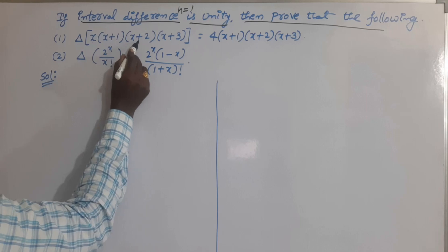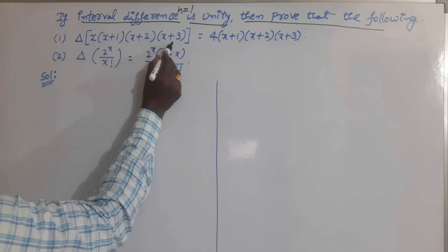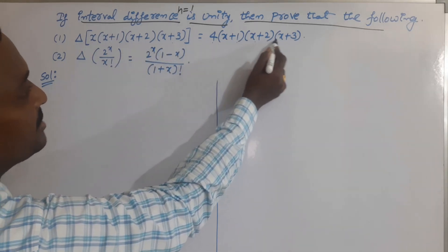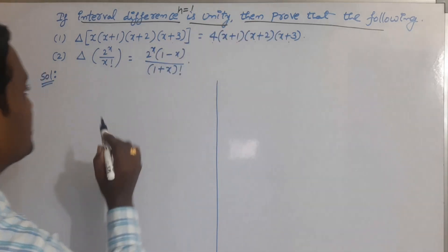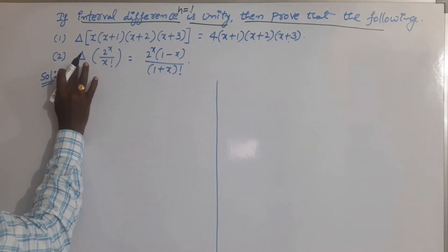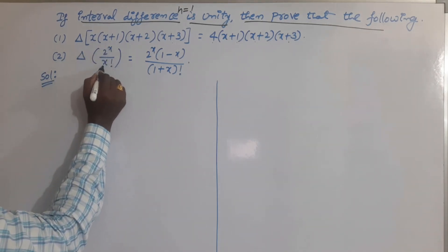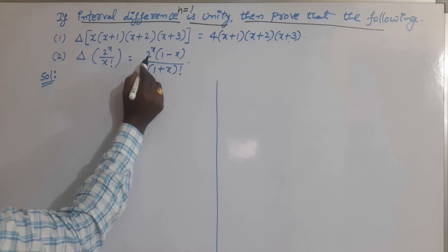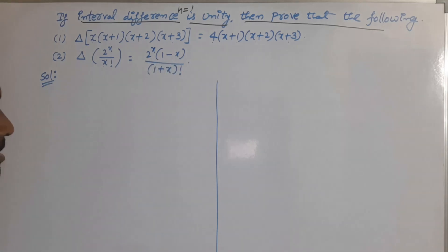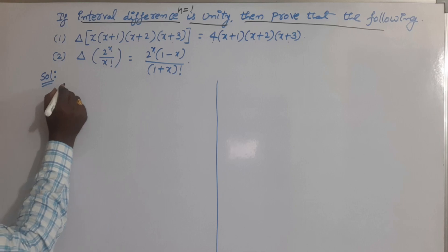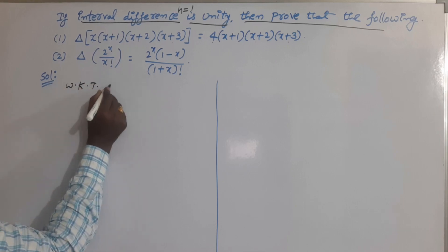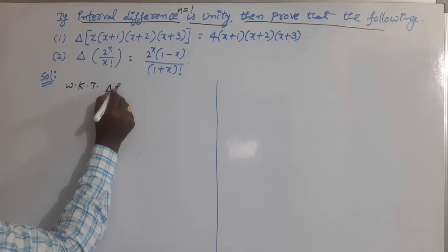We have to prove the following results. First, delta of x(x+1)(x+2)(x+3) is equal to 4 times (x+1)(x+2)(x+3). Similarly, we have to prove that the forward difference operator of 2^x / x! is equal to 2^x (1 - x) / (x+1)!.